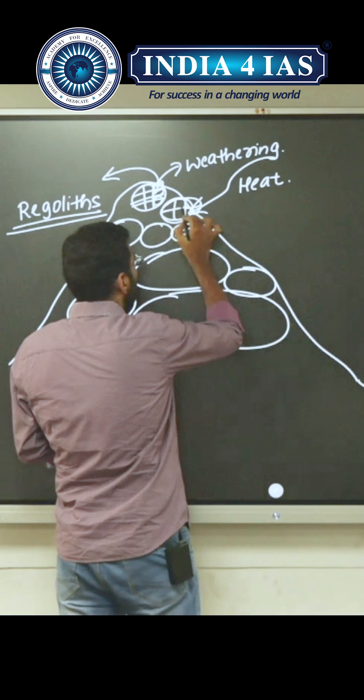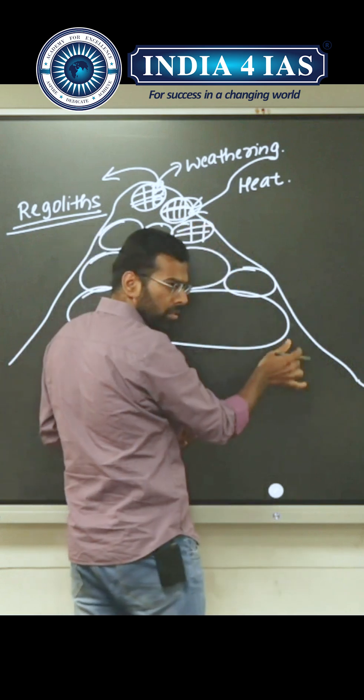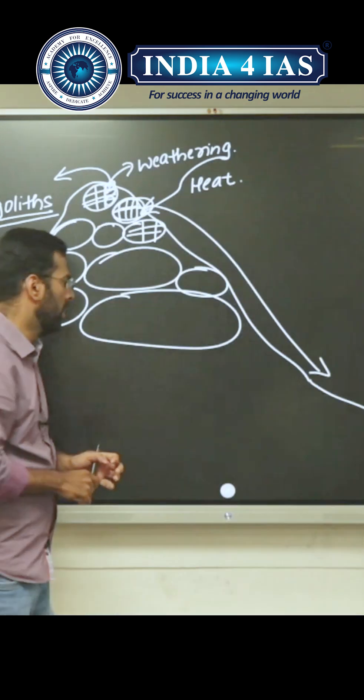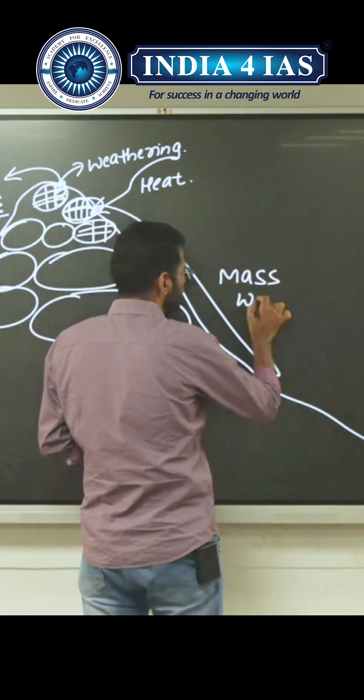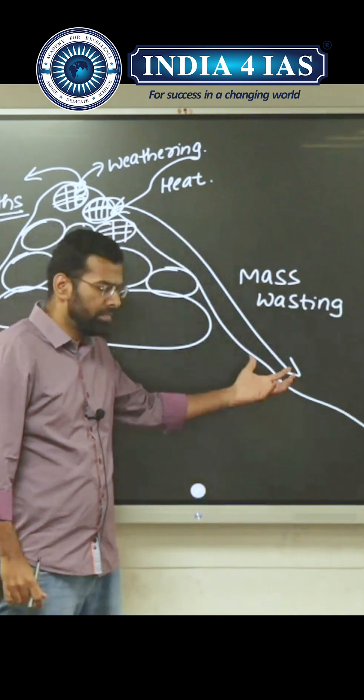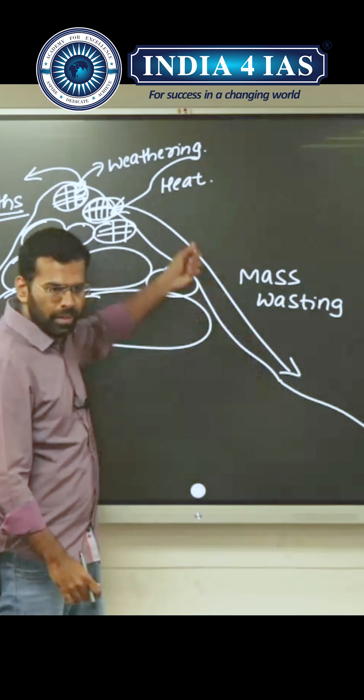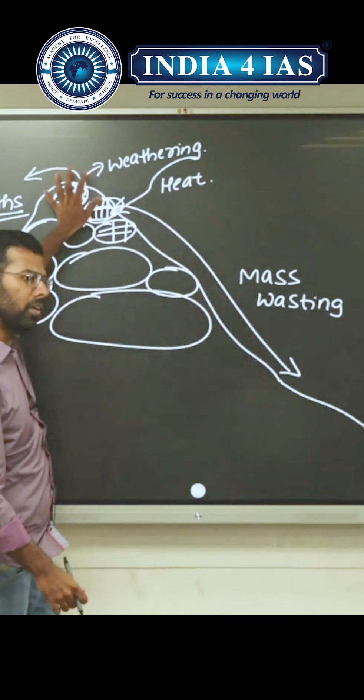Because of the earth's gravitational force, we have buildup. That's why we have mass movement or mass wasting. Because of the earth's gravitational force, the high altitude materials move down.